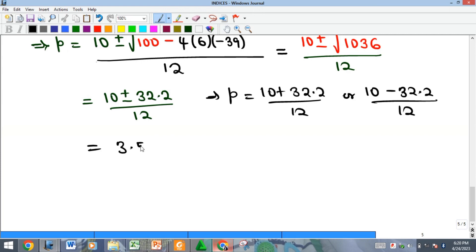When you divide by 12, that's going to give you 3.52. Or when you subtract, you're going to get minus 22.2. When you divide by 12, that will give us minus 1.85.